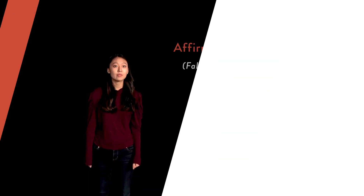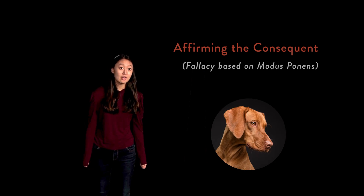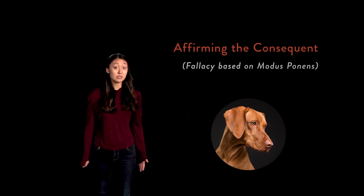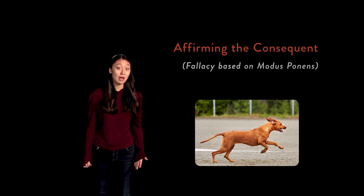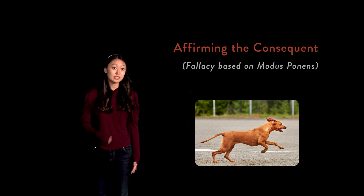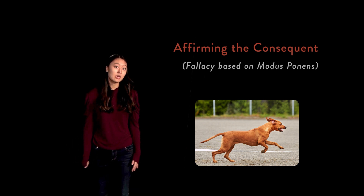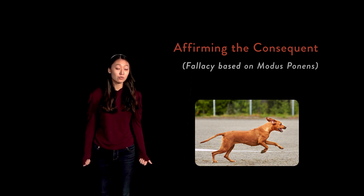First, affirming the consequent. Suppose you know that if a certain dog can smell things up to one mile away, then it will chase after some animal. Now, suppose that the dog goes chasing after some animal. From this information, if you were to further conclude that the dog must have been able to smell things up to one mile away, you would be committing the fallacy of affirming the consequent. While the dog did in fact chase after an animal, we are not told whether the dog smelled the animal or whether it used one of its other senses to detect the animal. Because of this, we cannot assuredly conclude that the dog can smell things up to one mile away.